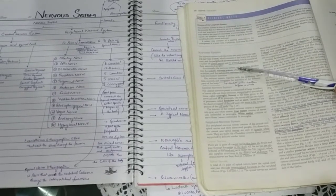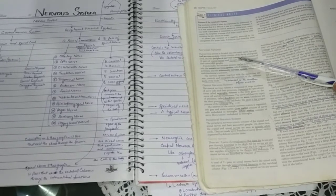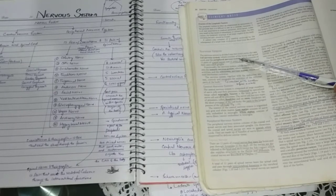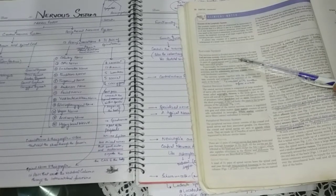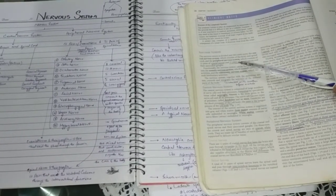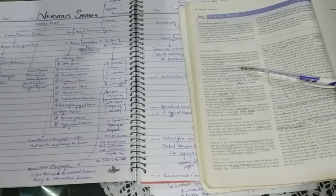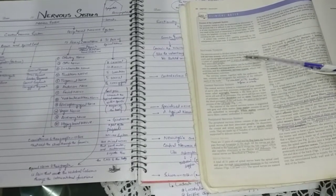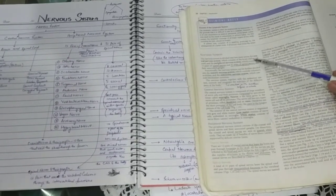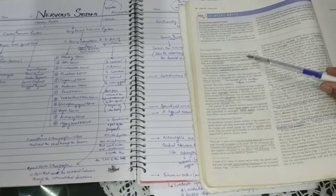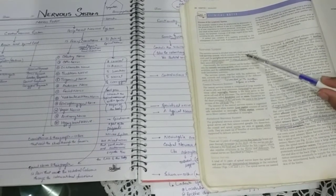There are 31 pairs of spinal nerves, with every segment having a pair of nerves. For example, cervical nerves, thoracic nerves, lumbar nerves, sacral nerves, and coccygeal nerves. These spinal nerves are in the vertebral column and control our activities. You need to remember: the nervous system is divided into two parts — central nervous system and peripheral nervous system — made from brain and spinal cord.